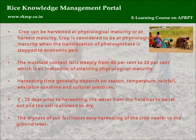The crop is considered to be at physiological maturity when the translocation of photosynthate is stopped to the economic part. The moisture content falls steeply from 40% to 20%, which is an indication of attaining physiological maturity. Harvesting time generally depends on season, temperature, rainfall, available sunshine, and cultural practices.